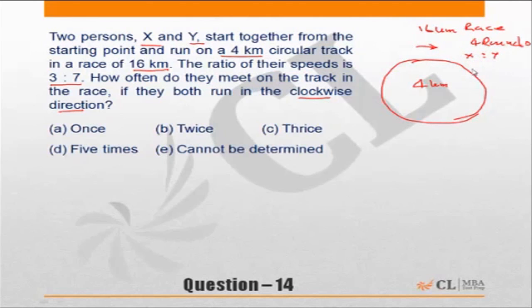to Y is 3 to 7. The question is: how many times do they meet on the track in the race? Now, the condition for them to meet is that the faster person should gain one complete round over the slower person for every meeting. So if the faster person has